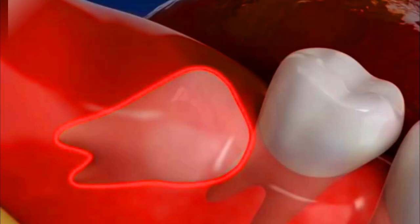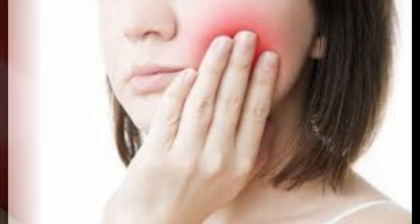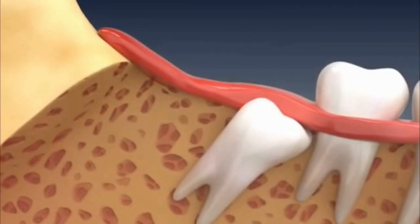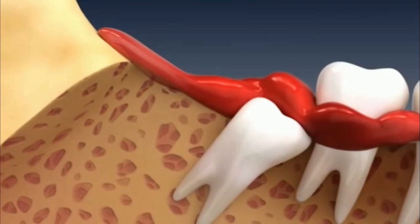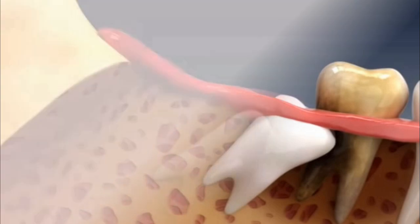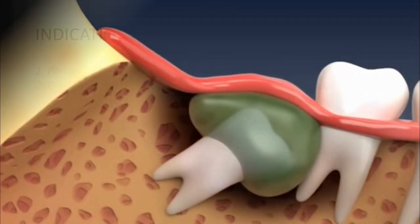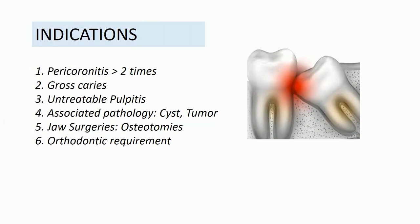Impacted wisdom teeth are unable to erupt into the mouth either due to lack of space distal to the second molar or due to their position. An impacted wisdom tooth may be painful and can contribute to problems such as infection like pericoronitis, damage to neighboring teeth, tooth decay, and more serious problems such as cystic formation which requires surgery.